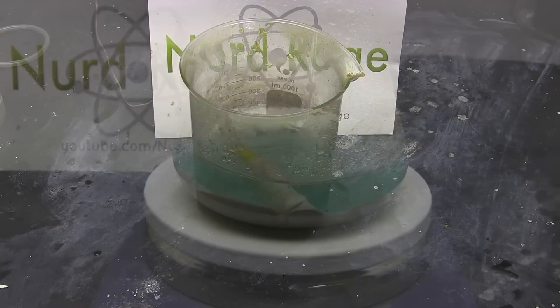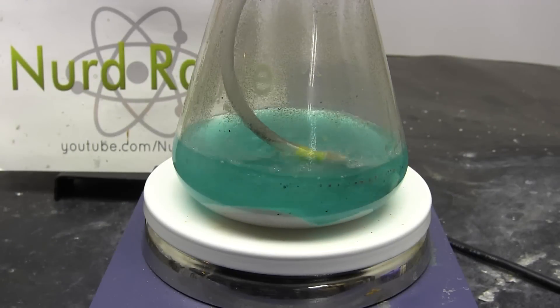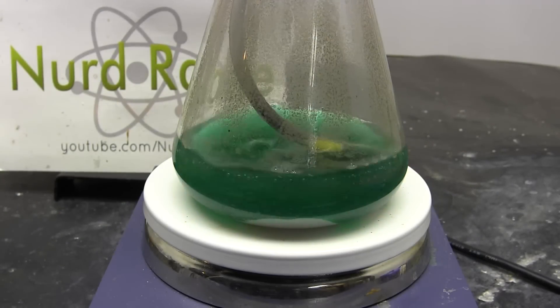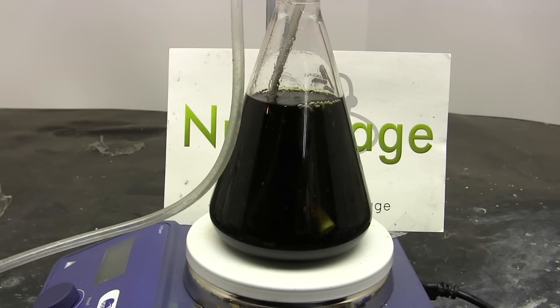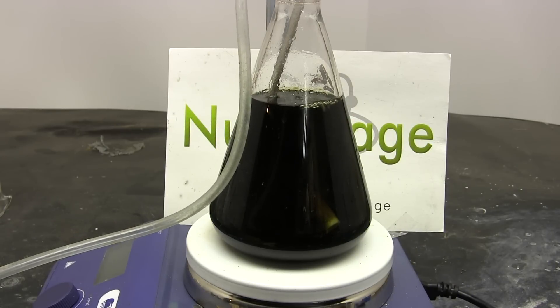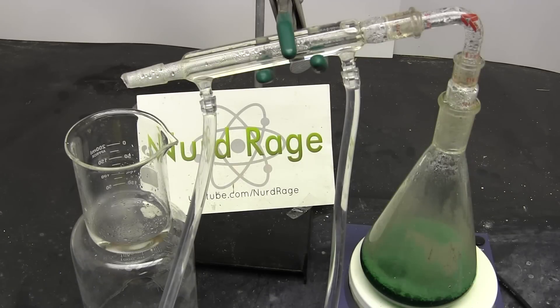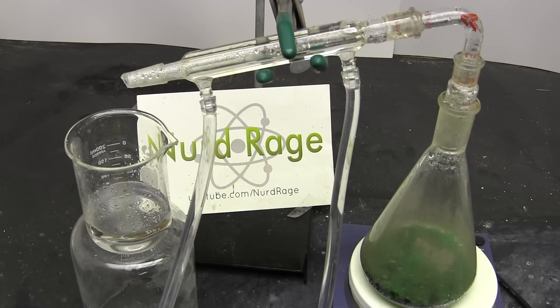Greetings fellow nerds, in this video we're going to recover the copper in a spent solution of ferric chloride printed circuit board etchant, as well as restore the ferric chloride etchant to working chemistry. And as an added challenge we're going to do so without producing any additional chemical waste.